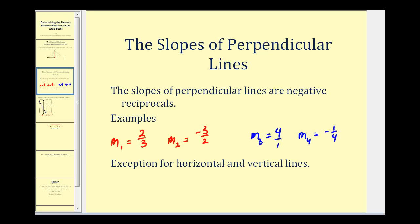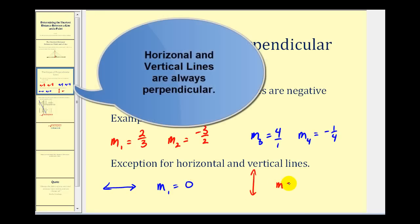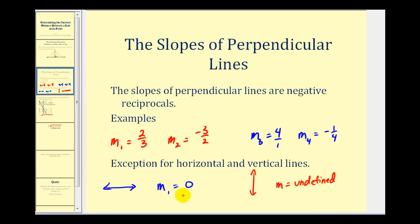The only exception is when we have a vertical and a horizontal line. A horizontal line has a slope equal to zero and a vertical line has an undefined slope. One way to remember this: write zero as zero over one — the negative reciprocal would be negative one over zero, which is undefined.